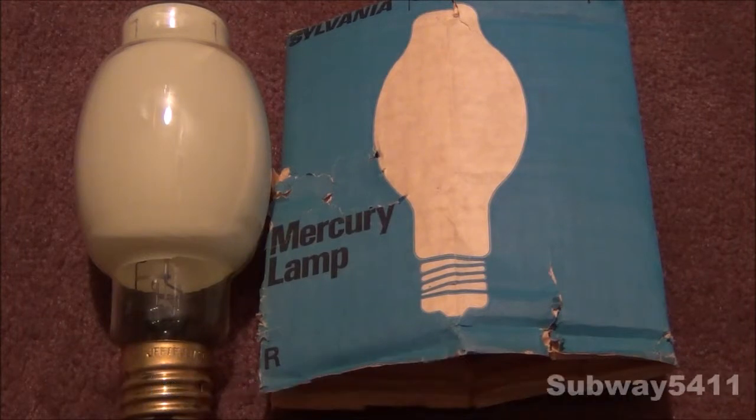This is a coated bulb as you can see, and it uses a slash N phosphor. That's quite unusual. I've never really seen mercury lamps with slash N phosphors. I've only seen mercury lamps with slash DX, slash C, and clear ones.